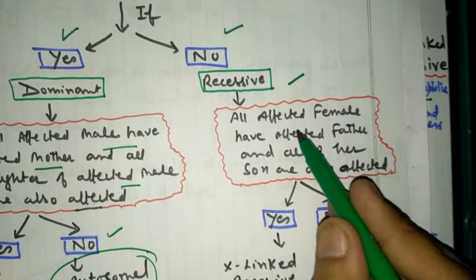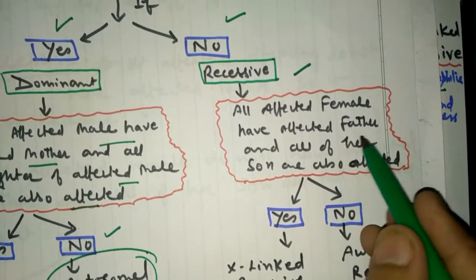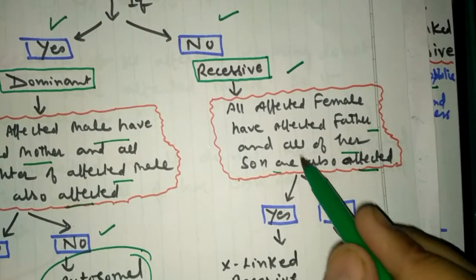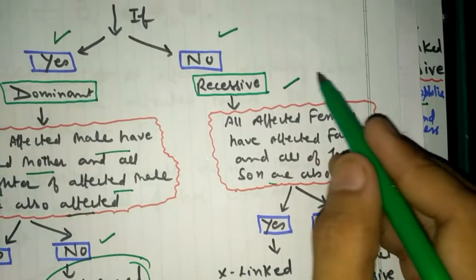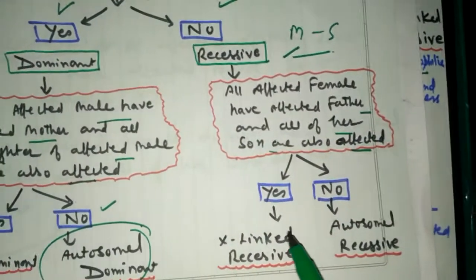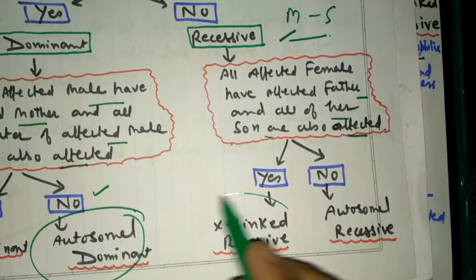In the case of no, that is recessive: do all affected males have an affected father and are all of their sons also affected? That is, the character or disorder is coming from mother to son. If it is yes, it is X-linked recessive.